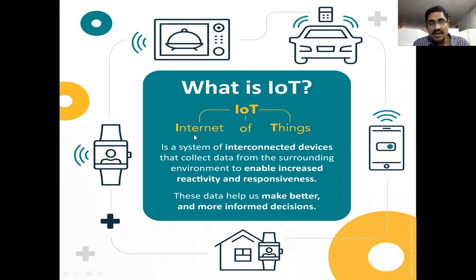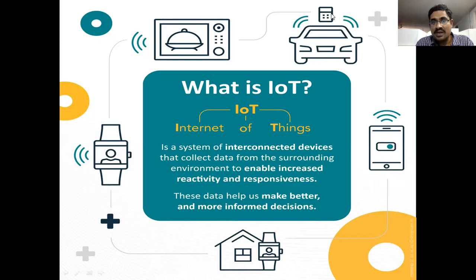Internet of Things is a system of interconnected devices that collect data from the surroundings in your environment to enable increased reactive and responsive use. These data help us make better and more informed decisions. Simply, through these apps or through IoT, all other devices are connected and exchanging data, information, images, and objects between them by using this app. This exchanging of data and connection between devices by using internet is called IoT — Internet of Things.